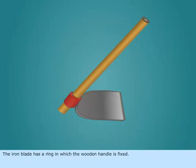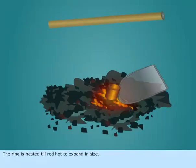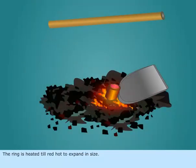The iron blade has a ring in which the wooden handle is fixed. The size of the ring is slightly smaller than the wooden handle. The ring is heated till red hot to expand in size.